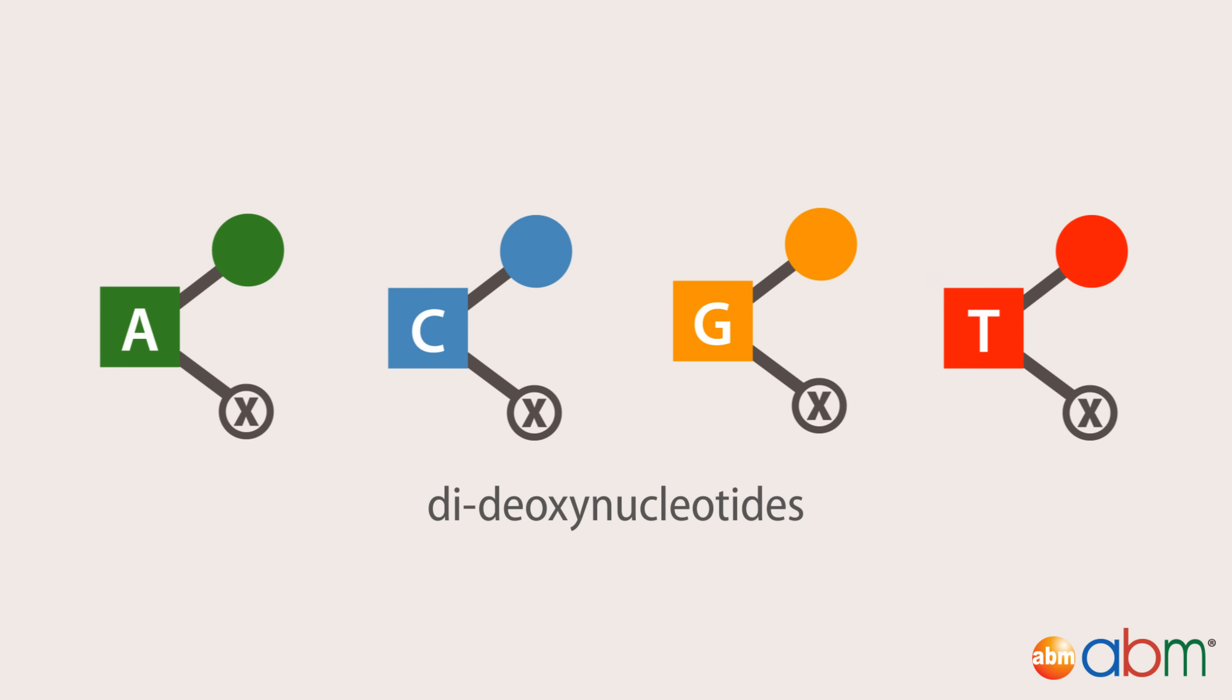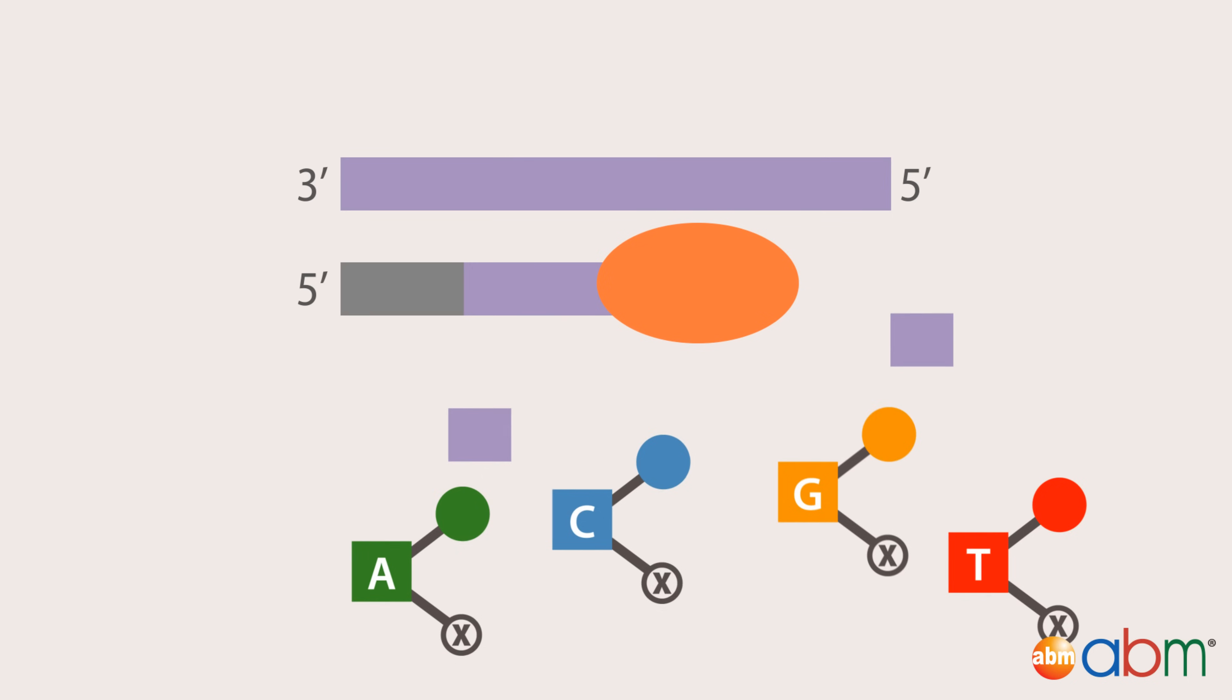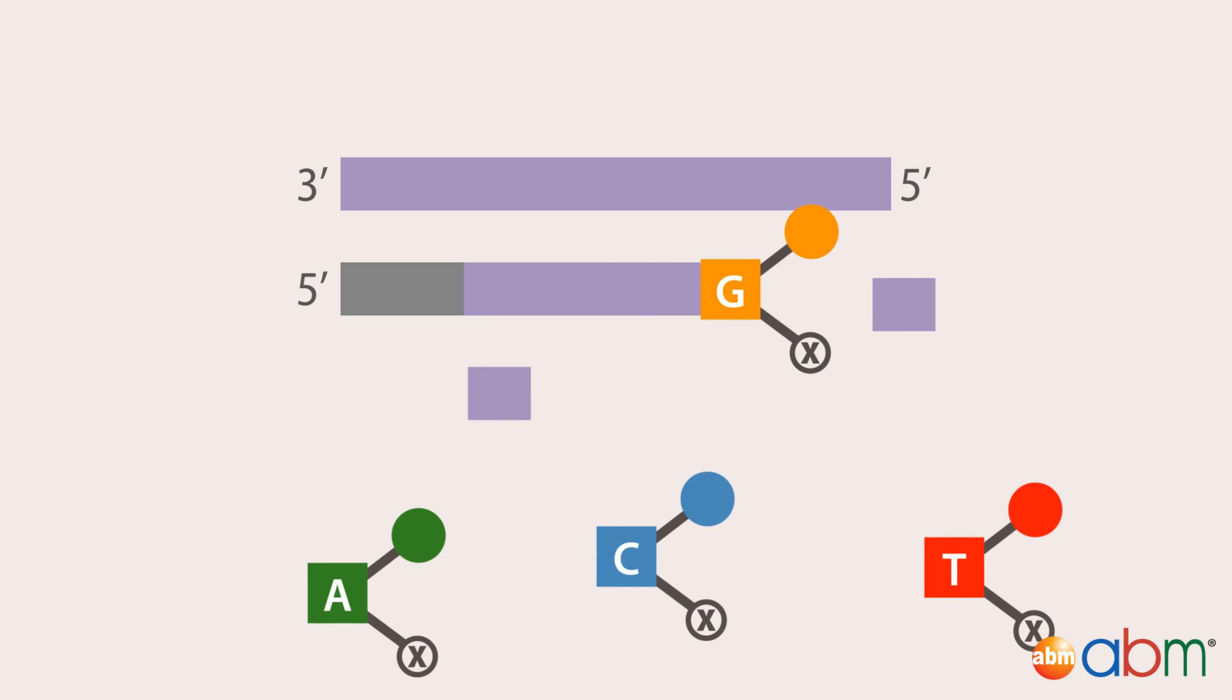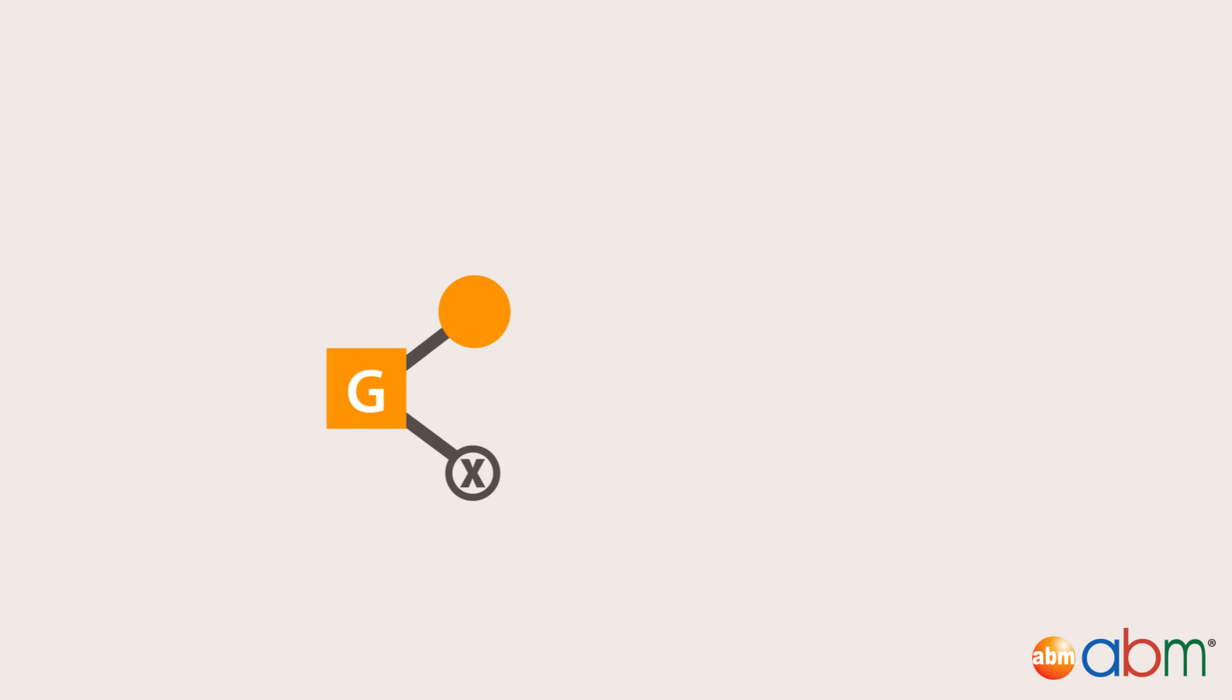Each reaction also contains a mixture of four dideoxynucleotides, one for each DNA base. These dideoxynucleotides resemble the DNA monomers enough to allow incorporation into the growing strand. However, they differ from natural deoxynucleotides in two ways.